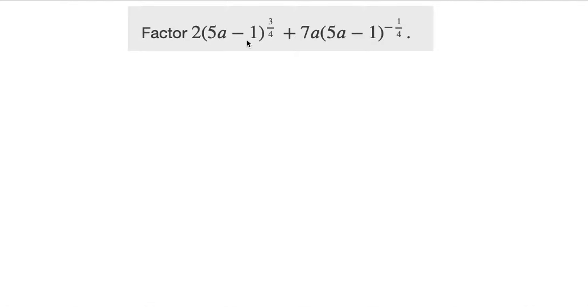2 times (5a minus 1) in exponent 3 over 4, plus 7a times (5a minus 1) in exponent minus 1 over 4.